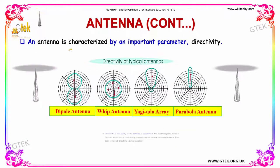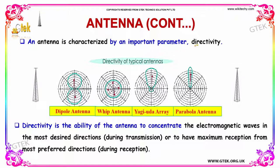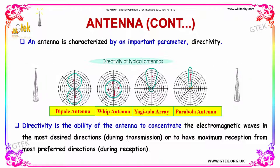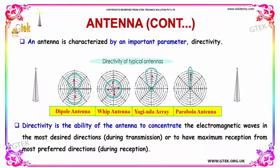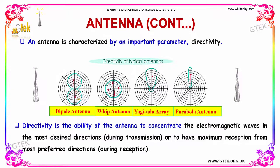An antenna is characterized by an important parameter: directivity. You can see here the dipole antenna, the VIP antenna, the Yagi-Uda array antenna, and the parabolic antenna. Directivity is defined as the ability of the antenna to concentrate electromagnetic waves in the most desired direction during transmission, and to have maximum reception from the most preferred direction during reception — focusing in different directions.